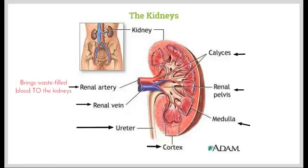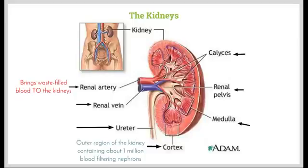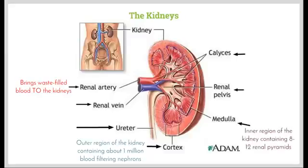We have the renal artery, whose job is to bring waste-filled blood to the kidneys. It then enters the outer region of the kidney, which is the cortex. The cortex contains about a million blood-filtering nephrons. Then we have the medulla, which is the inner region of the kidney, and that contains about eight to twelve renal pyramids.